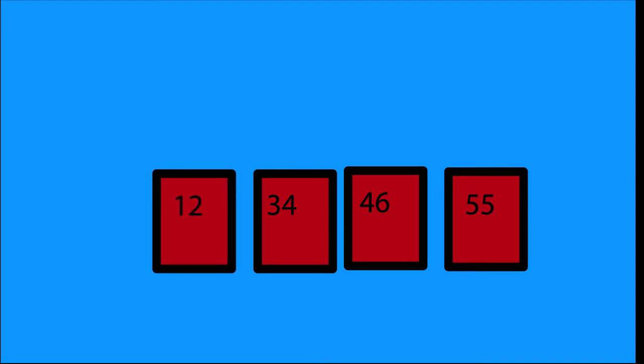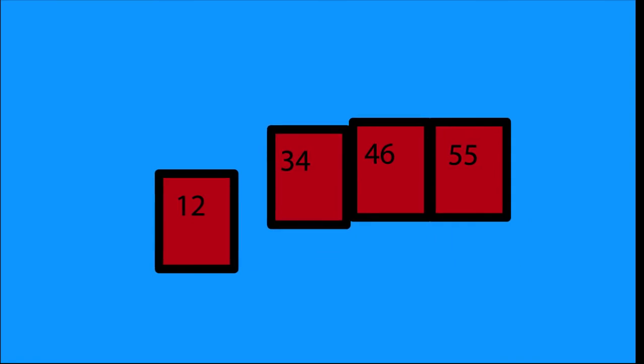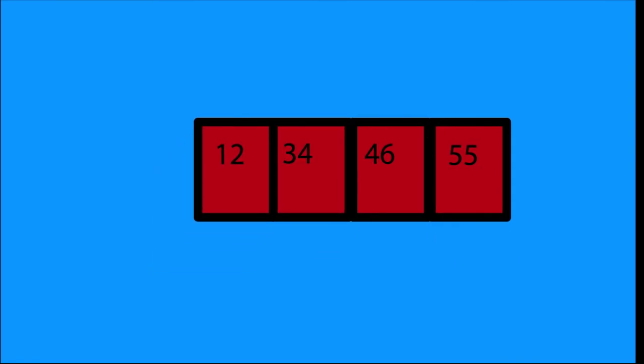Now my insertion sort is swapped in place. I take 46 and swap it with 55. I don't swap 46 with 34 because the array is in order. So now my array is in order — it's perfect, and insertion sort has worked.